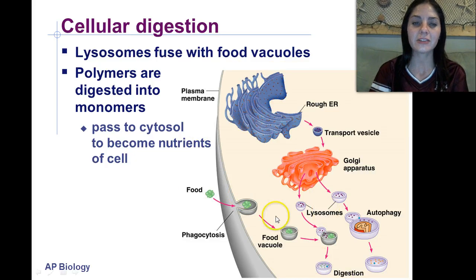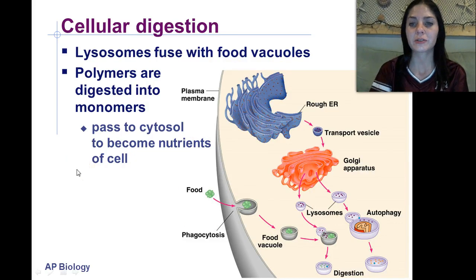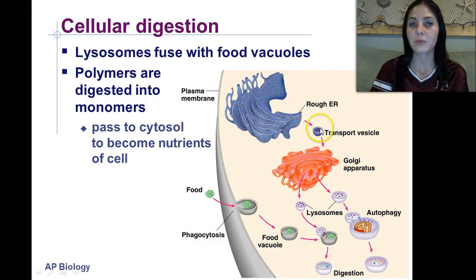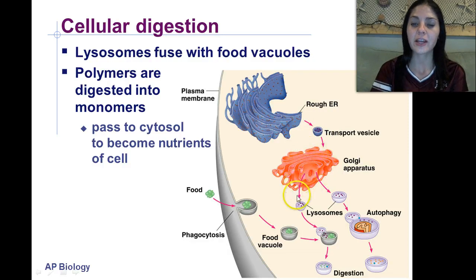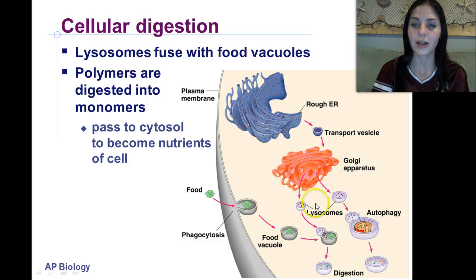Those monomers then pass to the cytosol to become nutrients. The rough endoplasmic reticulum forms a transport vesicle that goes into the cis side of the Golgi apparatus, where it's packaged and sorted, forming lysosomes that exit the trans side.